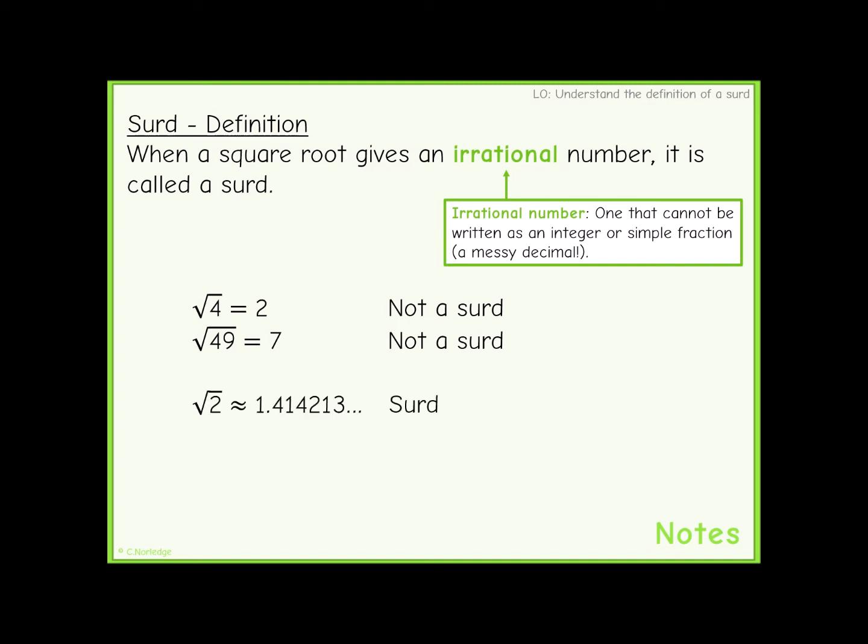On the other hand, the square root of 2, if you evaluate it on a calculator, is 1.414213 and so on. This is an irrational number, so root 2 is a surd.